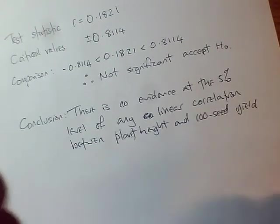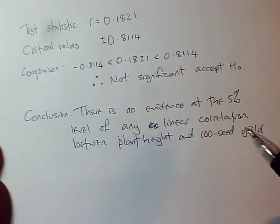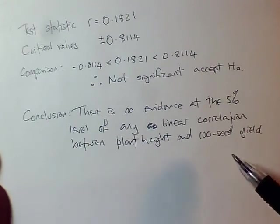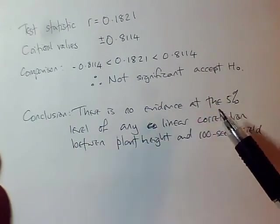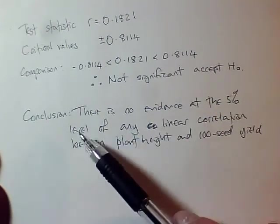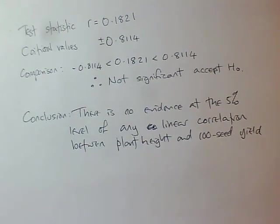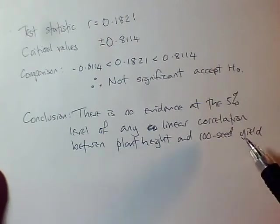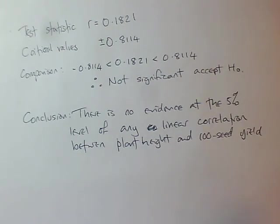So I've concluded our significance test with a clear, contextualized conclusion about plant height and 100-seed yield. I've mentioned the significance level, I've correctly said there is no evidence. We have no evidence that H0 is true, but we haven't had evidence that would make us reject H0 in favour of H1, so the conclusion is correctly worded to say there is no evidence. I hope that helps.